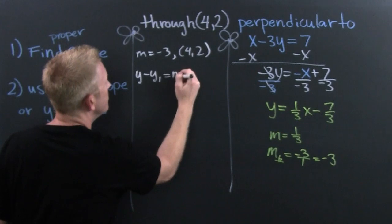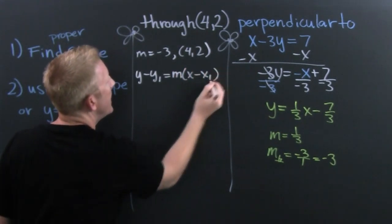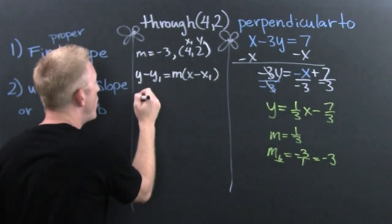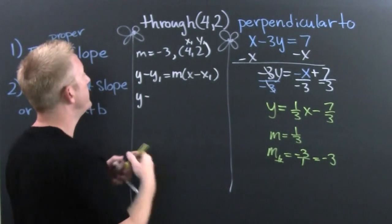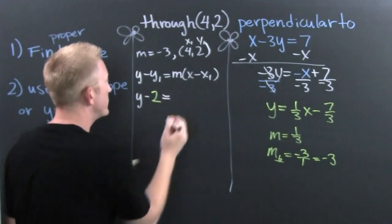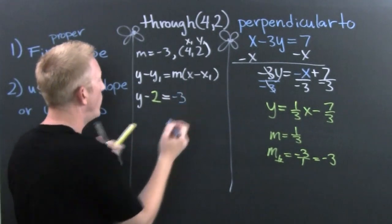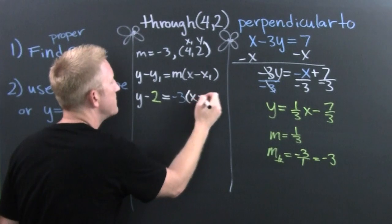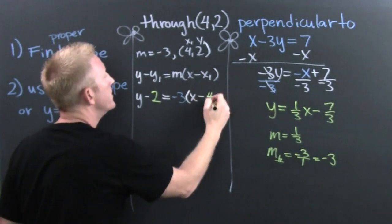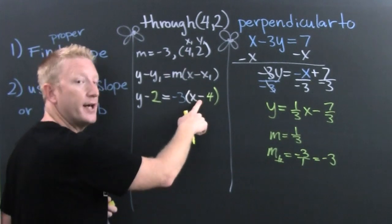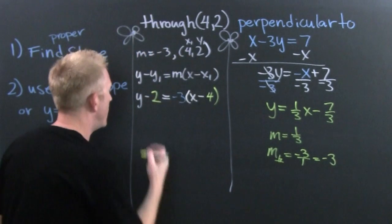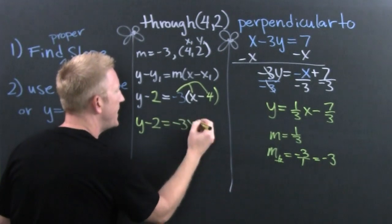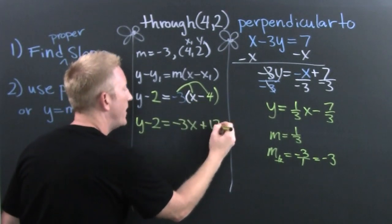Point-slope is: y minus y₁ equals slope times (x minus x₁). Until you're a professional you should probably label these x₁, y₁, and slope. So: y minus 2 equals negative three times (x minus 4). Had that been a minus sign it would have been plus, because minus and minus make plus. Keep on keeping on.